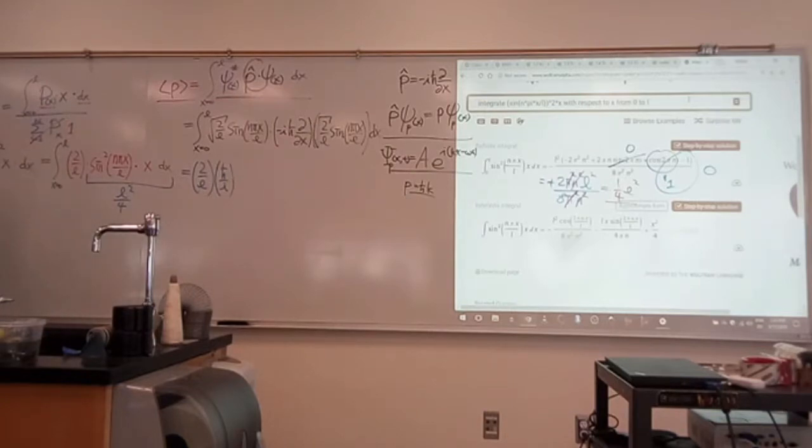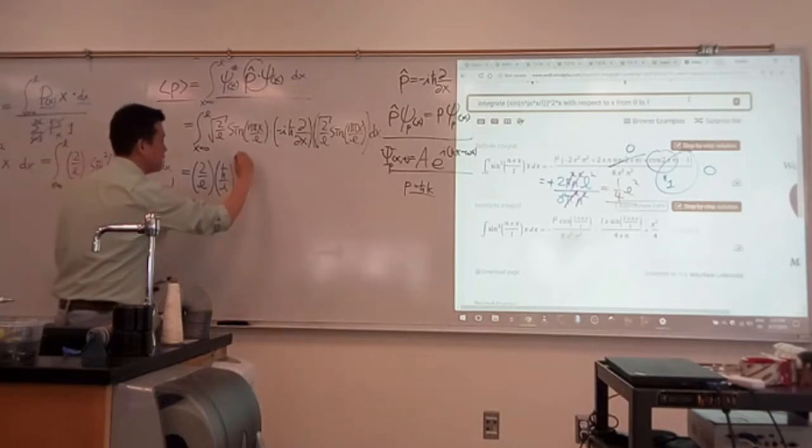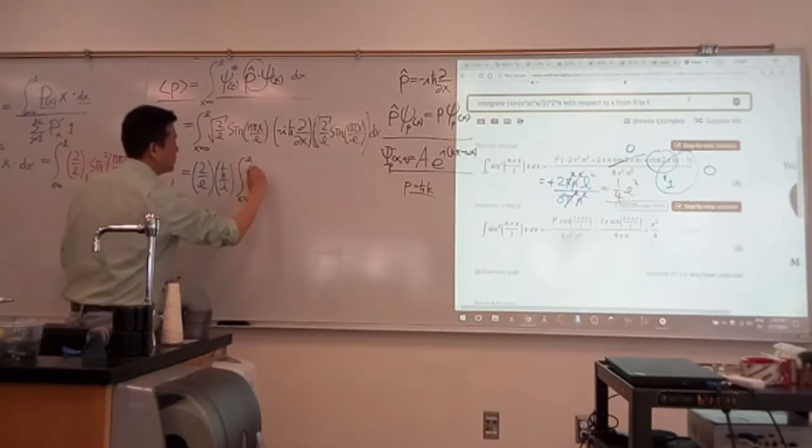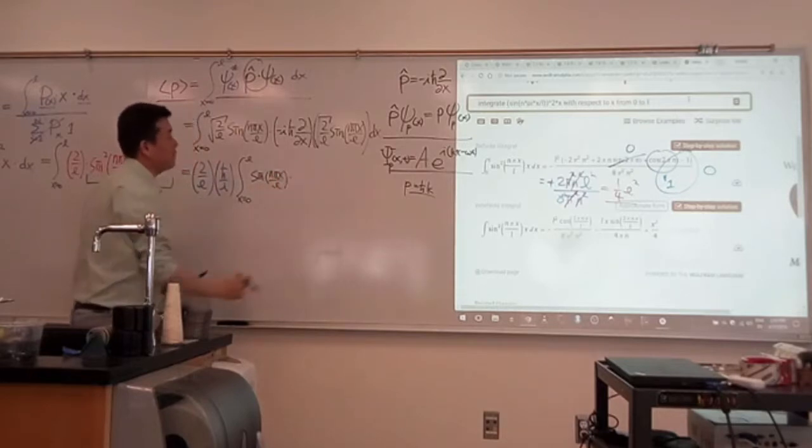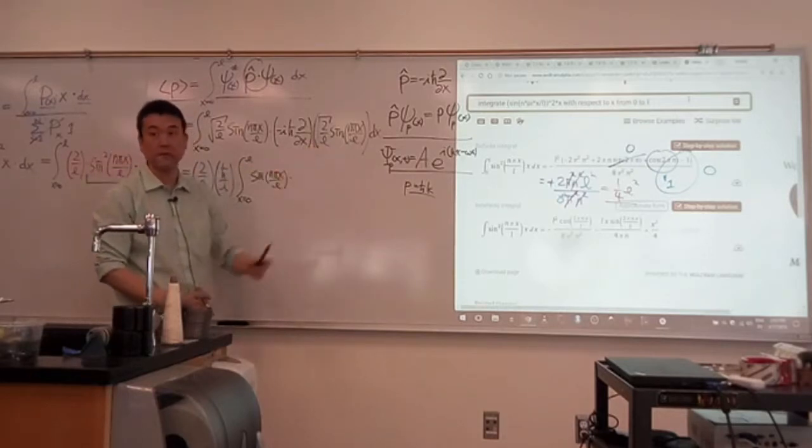And I think I can write down the rest. So it's still under the integral. I have this function still. Sine of n pi x over L times, okay, I have to do this derivative. So use the chain rule. The factor inside comes out.